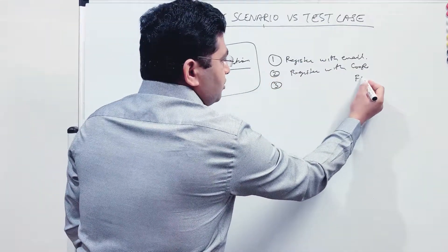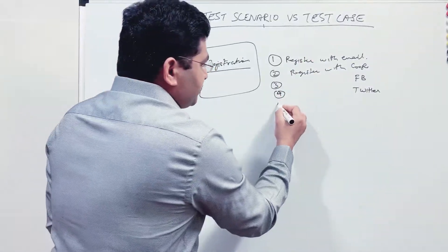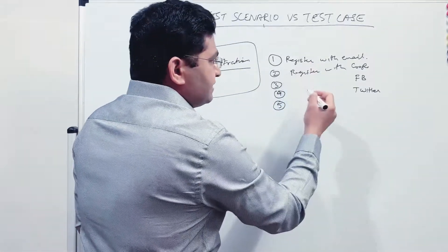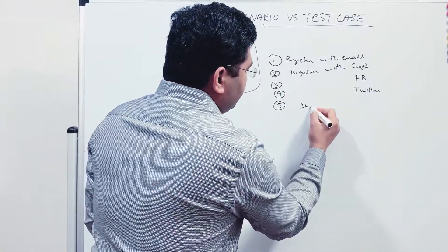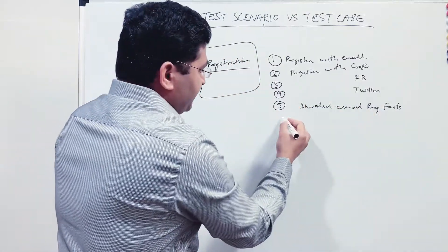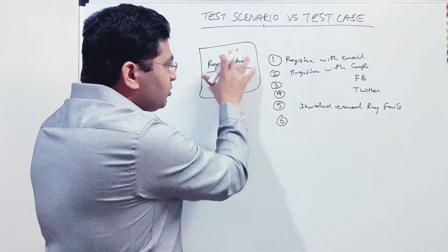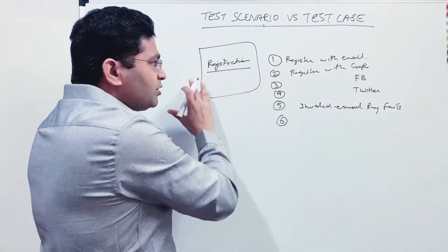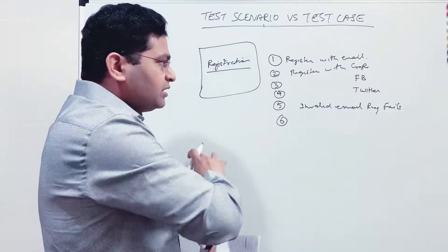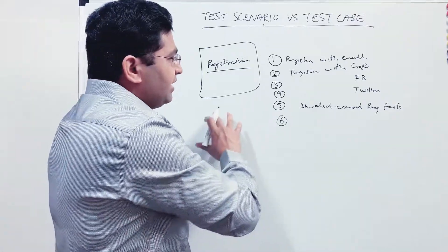Continuing the scenarios for registration: register with Facebook, register with Twitter account. These are positive scenarios based on what the registration functionality supports. Then we cover negative scenarios — for example, verify that registration is not successful with an invalid email, so: registration fails with invalid email. You keep extending and thinking about what all scenarios are possible for this functionality, referring to the requirement document and clarifying any gaps with the business analyst.